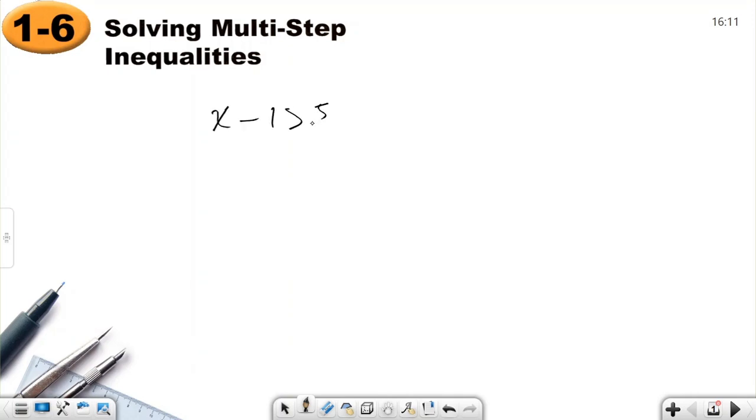x minus 1 greater than 5 only takes one step to get the solution. If I add 1 to both sides, minus 1 and plus 1 will be 0. x is greater than 6. So that's a one-step inequality.